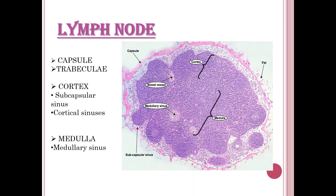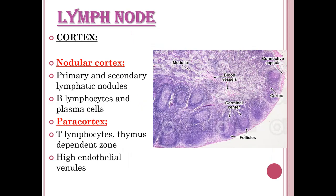Just below the capsule is the subcapsular area, which contains subcapsular sinuses. The cortical region inside contains blood vessels, and the deep region is the medulla. The cortex contains subcapsular and cortical sinuses, while the medulla contains medullary sinuses. The nodular cortex has primary and secondary lymphatic nodules, with B lymphocytes and plasma cells. The paracortex contains mostly T lymphocytes, forming the thymus-dependent zone, and features high endothelial venules.